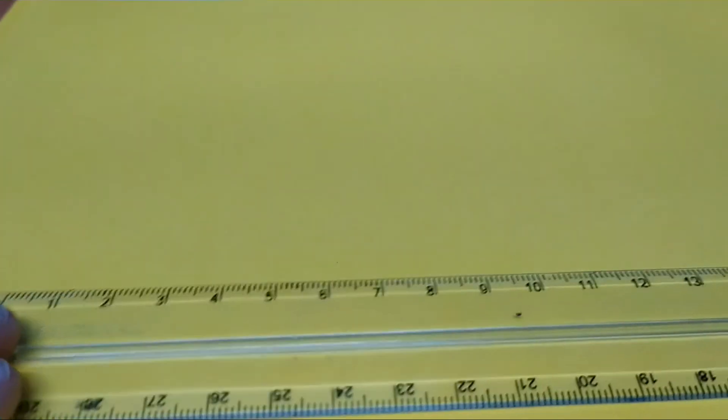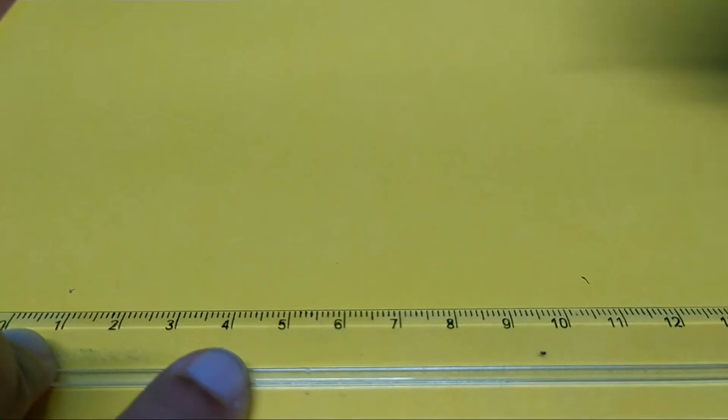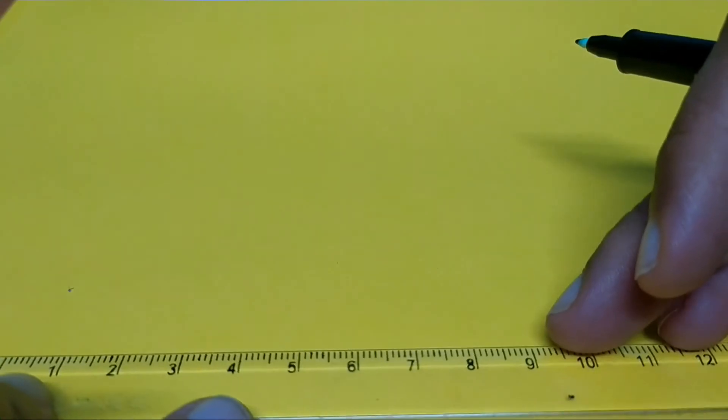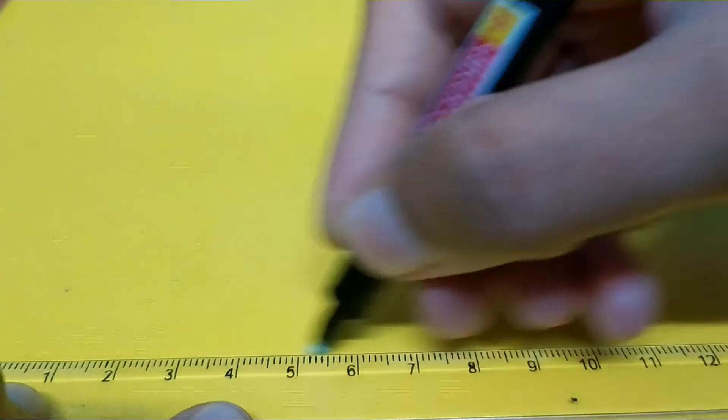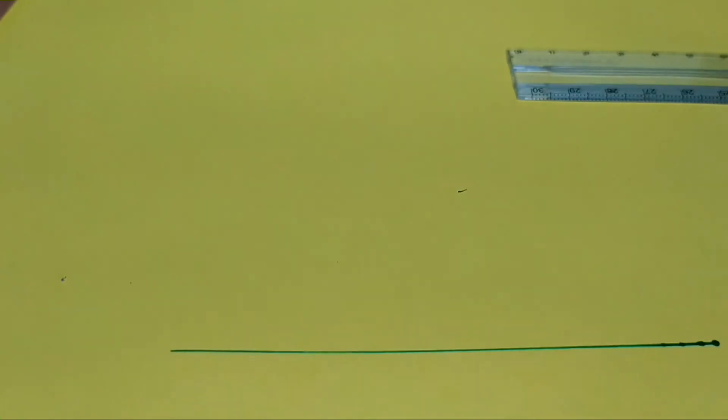We begin with the construction. First, using your scale, you're going to draw a line. I'm going to name that line as line M.